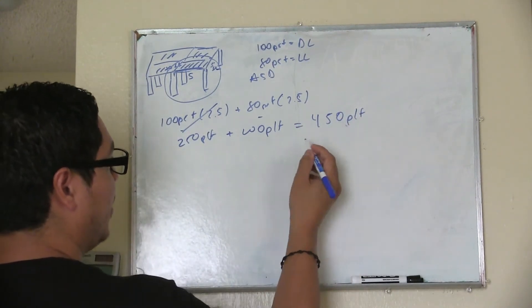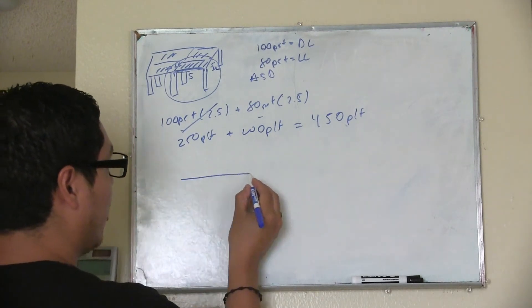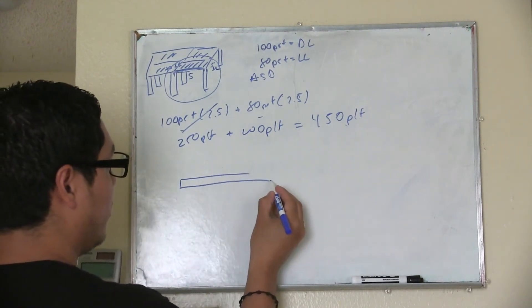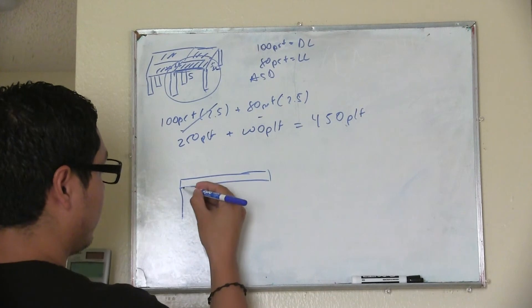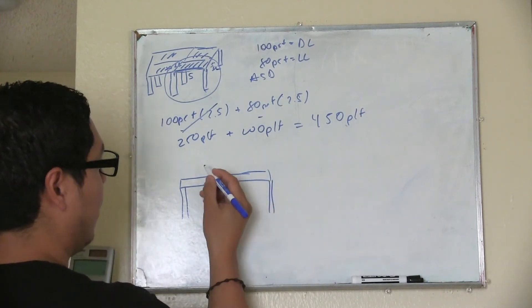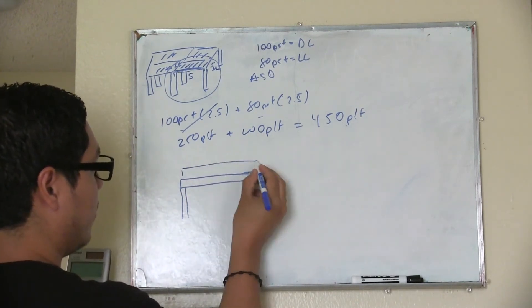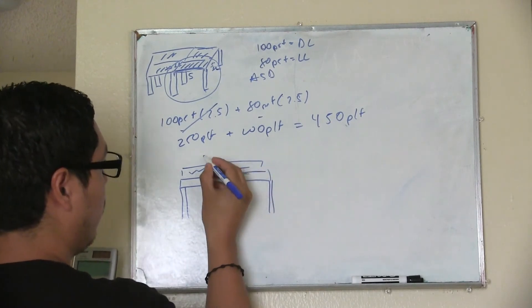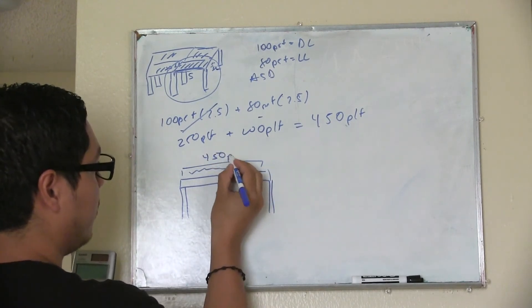So PLF means pounds per linear foot, so basically what you're going to have, you're going to have a distributed load in your beam like this. And the distributed load is going to be a distributed load of 450 PLF.